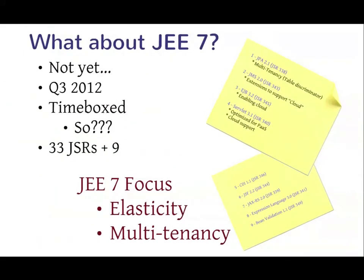So what about Java EE 7? Well, there's no such thing yet — it's a plan. It's coming out Q3. They swear it's coming out Q3, because they're timeboxing it. Whatever's not there goes to JEE 8. So it's a race to the finish — and if it doesn't make it, they just kick it to the next release. That's the statement from the Java folks — basically whatever comes out, comes out.